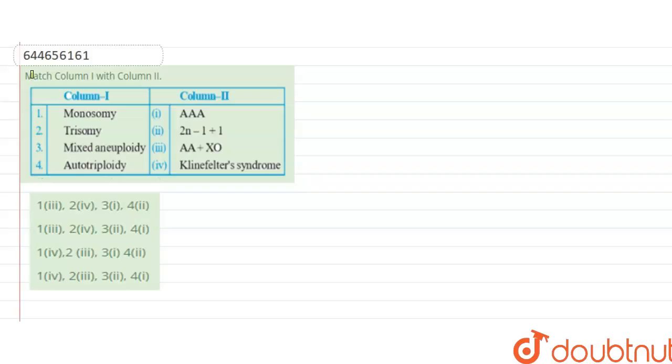Hello students, match column 1 with column 2. Column 1 has monosomy, trisomy, mixed aneuploidy, autotriploidy